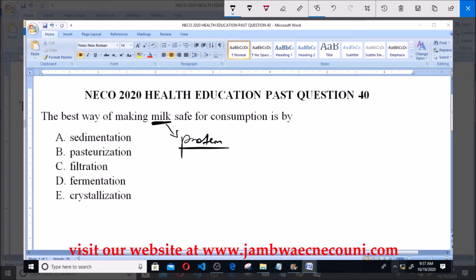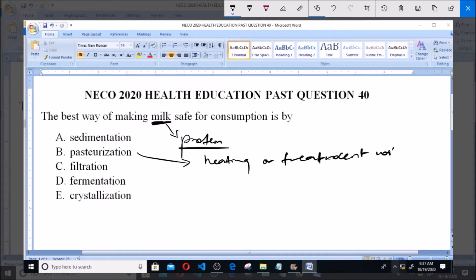Now, the best way to make milk safe for consumption is by pasteurization. That's pasteurizing the milk. Pasteurization involves the heating or treatment of milk with mild heat in order to remove pathogens.